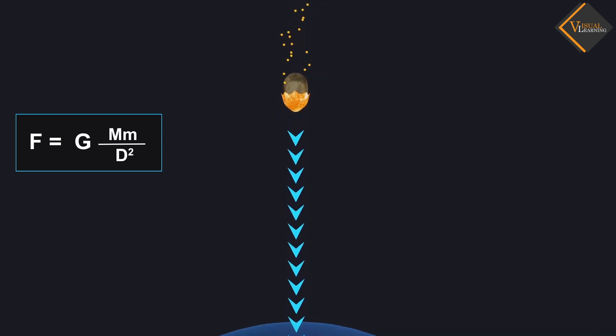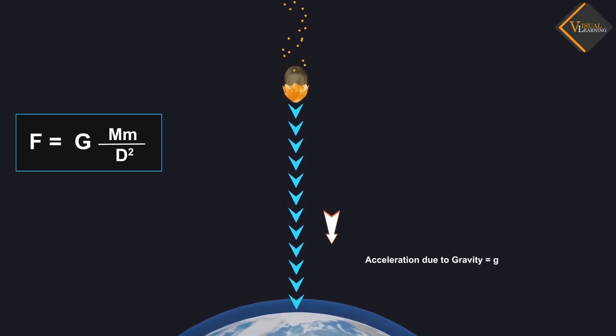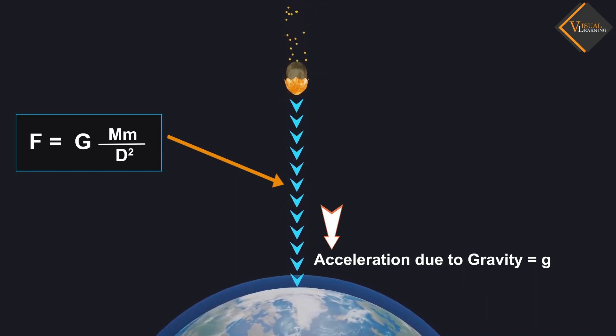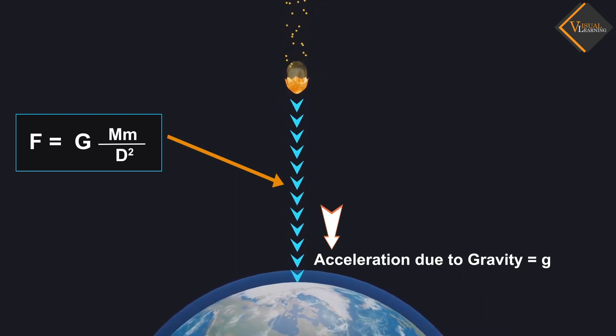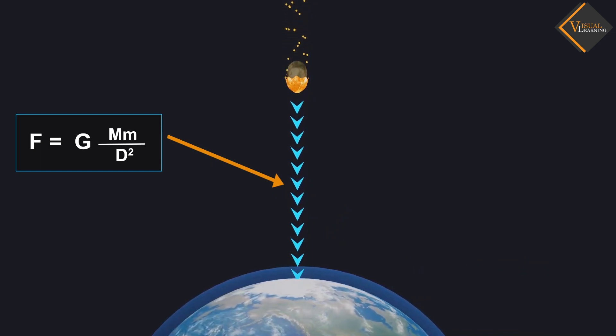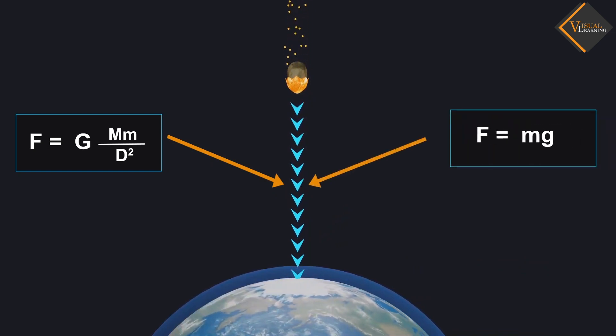And we already know that there is acceleration involved in falling objects due to the gravitational force, and is denoted by g. We know from the second law of motion that force is the product of mass and acceleration.